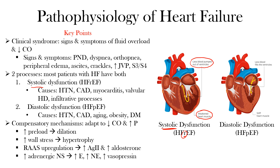In contrast to systolic dysfunction, diastolic dysfunction or HFpEF maintains a preserved ejection fraction, but less blood fills the left ventricle due to a stiffened myocardium. The left ventricular ejection fraction on echo will be normal, but the heart muscle appears thickened and hypertrophied — the cavity almost looks smaller — and less blood is able to fill that ventricle.